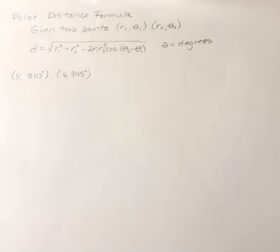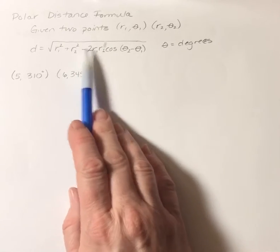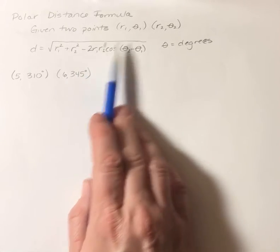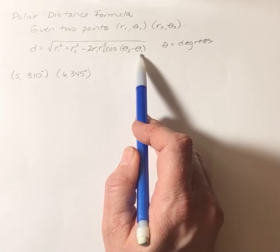So you take your r value, you square it. You take your r value, you square it. Minus two times the product of the two r values. And then you're going to take the cosine of theta sub 2 minus theta sub 1.